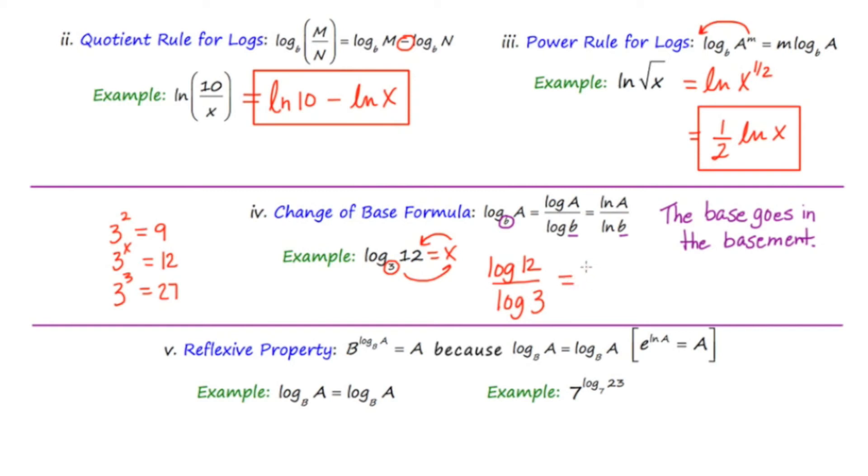So I have a choice. I could write this as the log of 12 over the log of 3. Notice how that 3, the base, ended up in the basement. Or I could do the natural log of 12 over the natural log of 3. Either case, the answer is going to end up being the same. So I could just use log or natural log. And hopefully it's going to be some decimal between 2 and 3.